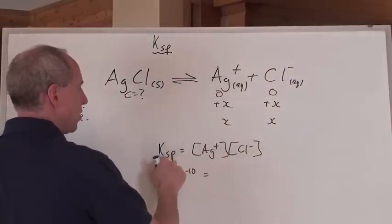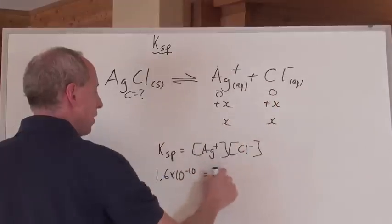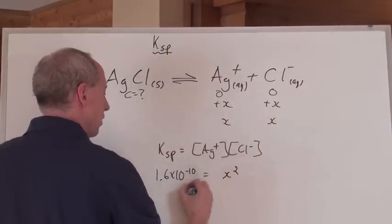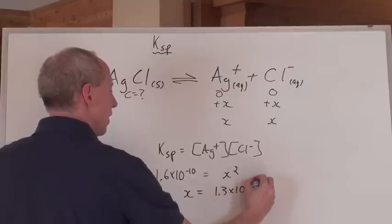Well, here's the equilibrium expression. Ksp equals the concentration of these two ions multiplied together. So, they're both X at equilibrium, so it's X squared. So, X equals, when you do the math, 1.3 times 10 to the negative 5.